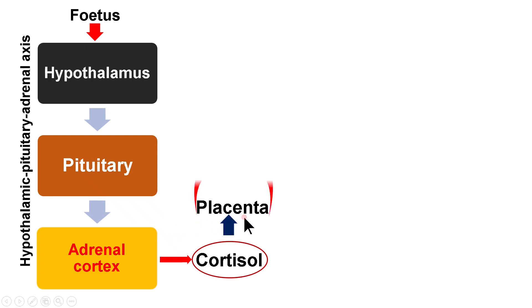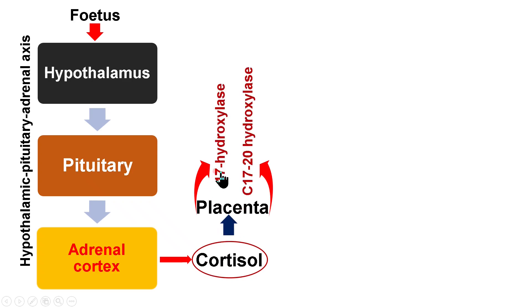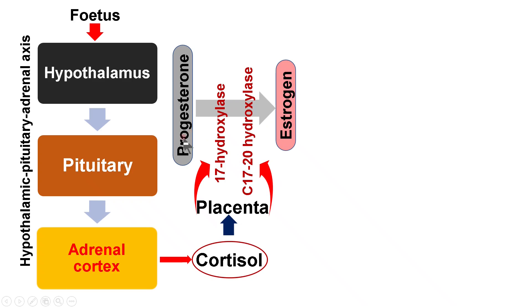In response to ACTH, the adrenal cortex releases fetal cortisol. This fetal cortisol acts upon the placenta, causing placental cells to increase synthesis of 17-hydroxylase and C17,20-lyase enzymes. These are the rate-limiting enzymes for converting progesterone into estrogen. The placenta is a temporary endocrine gland, very important for maintenance of pregnancy, as it produces progesterone which prevents uterine contractility.